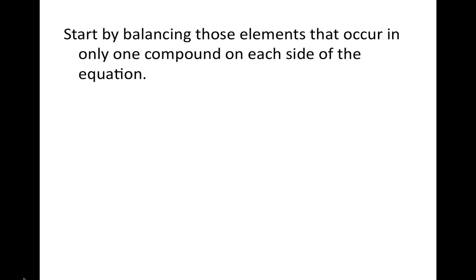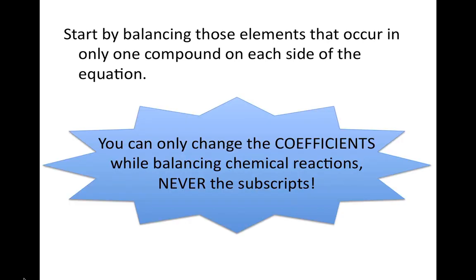We'll start balancing chemical equations by balancing the elements that occur in only one compound on each side of the equation. When balancing chemical equations, you can only change the coefficients in front of the reactants or products. You can never change the subscript — if you change the subscript, you're actually changing the identity of the compound.